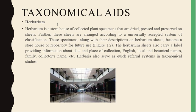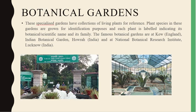The first example is herbarium. A herbarium is a storehouse of collected plant specimens that are dried, pressed, and preserved on sheets. These sheets are arranged according to a universally accepted system of classification. These specimens, along with their descriptions on herbarium sheets, become a repository for future use. The herbarium sheet also carries a label containing information like date, place of collection, botanical name, family name, collector name, etc. Herbaria also serve as a quick referral system in taxonomical studies.